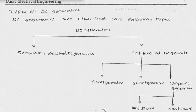Dear students, welcome to this session. In this session, we are going to look into the different types of generators. In the previous session, we looked into what is a DC machine. A DC machine is basically a machine which converts DC electrical energy into mechanical energy, or mechanical energy into DC electrical energy.